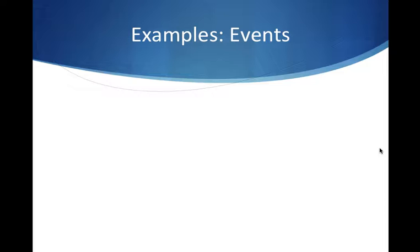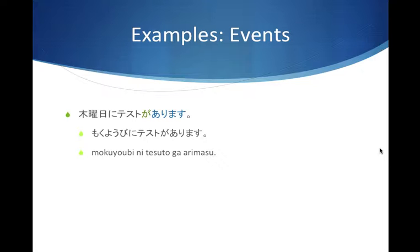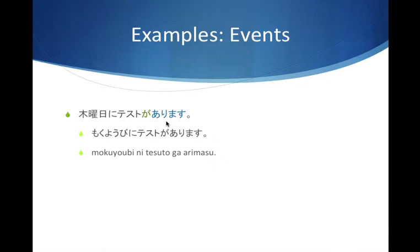The next example is about events — things that are going to take place. Say you have a test on Thursday: 'Mokuyoubi ni tesuto ga arimasu.' Mokuyoubi means Thursday. Since we're talking about a time reference, we use Ni. This Ni is tied to the time reference — not a place, but a time. So: tesuto ga arimasu means 'there is a test,' and combined: 'Mokuyoubi ni tesuto ga arimasu' — there will be a test on Thursday.